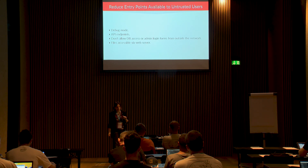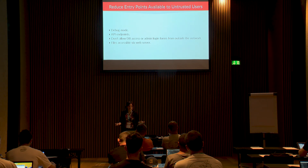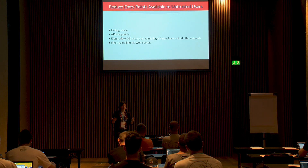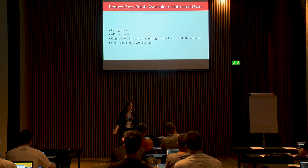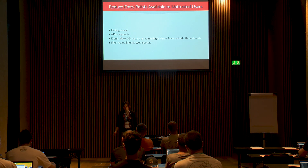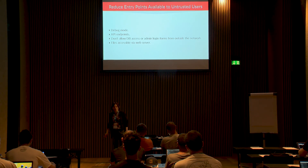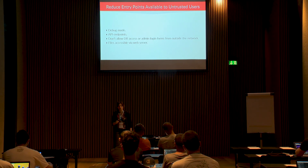Reduce the entry points to untrusted users — like anonymous users on the internet. Debug mode in production is a very good way to expose way too much information. People say, 'Well, what can you do with stack traces?' With stack traces, I can know which versions of which plugins you run, find known vulnerabilities for those versions, and then attack you through those. If I know the paths of your files, I can perform an attack where I override a file, and I already know your folder structure and the absolute path to some config file.